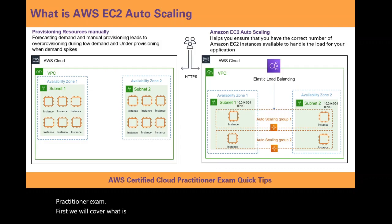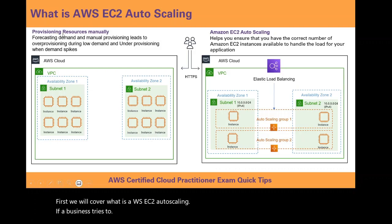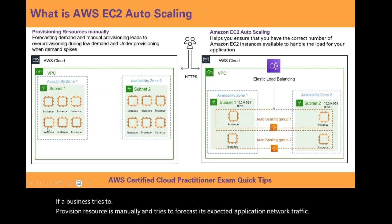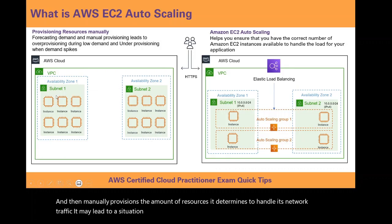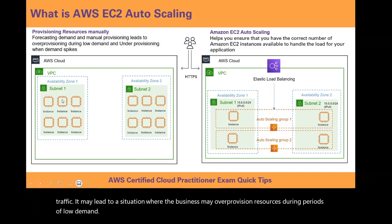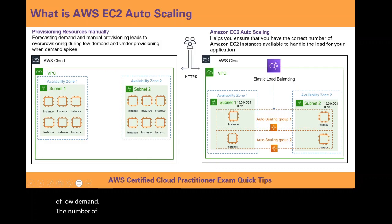If a business tries to provision resources manually and tries to forecast its expected application network traffic, then manually provisions the amount of resources it determines to handle its network traffic, it may lead to a situation where the business may over-provision resources during periods of low demand. The number of instances may be simply too many for very low application network traffic.